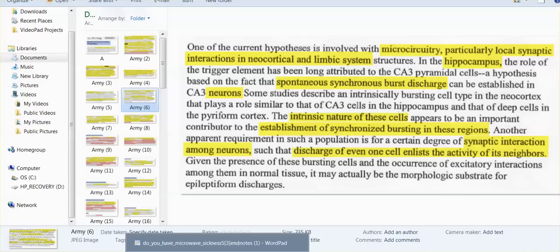Microcircuitry, local synaptic interactions in neocortical and limbic system, the hippocampus, the spontaneous synchronization of these burst discharges in neurons, the intrinsic nature of cells, synaptic interaction among neurons. They understood that the discharge of even one cell elicits the activity of its neighbors.